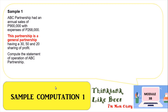Let's proceed with the sample computations so you can understand the computation of the partnership. Example number one is a general partnership. ABC Partnership has annual sales of 900,000 with expenses of 268,000, having a 30, 50, and 20 percent share of profit. We need to compute the statement of operations of ABC Partnership — that is, the income statement.